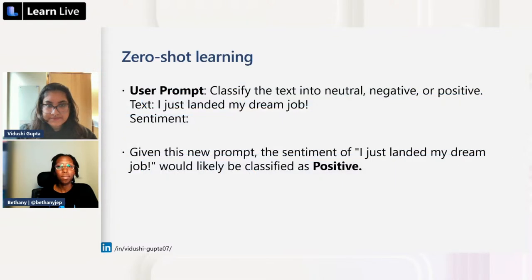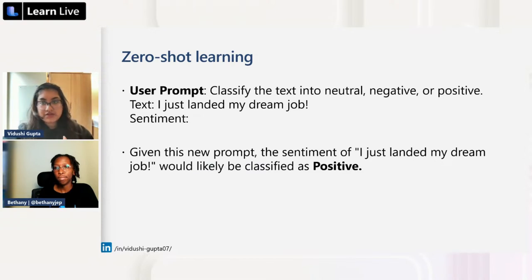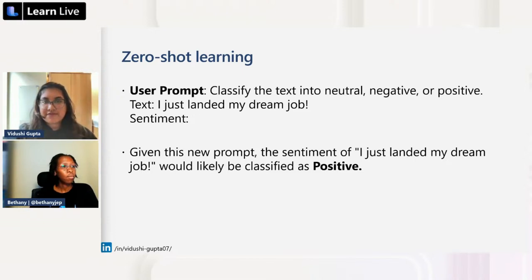In zero-shot learning, we assume the model already has enough information to do the task we're asking. We don't ask it to learn something new. For example, classifying the text 'I just landed my dream job' — the model already knows how to classify sentiment without any additional examples.